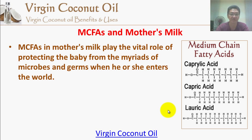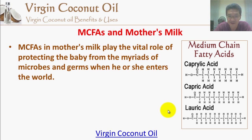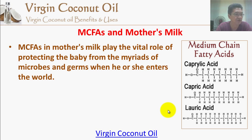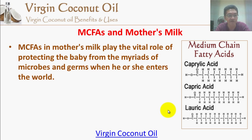When babies are born, their system is still not mature and their defense mechanism is not fully in place. But mother nature actually gives them a weapon — MCFAs. Because of this, nowadays most modern milk formulas contain MCFAs in some form, either as lauric acid or monolaurin. They try to mimic mother's milk, and one of the most powerful components of mother's milk is MCFAs — the medium chain fatty acids.